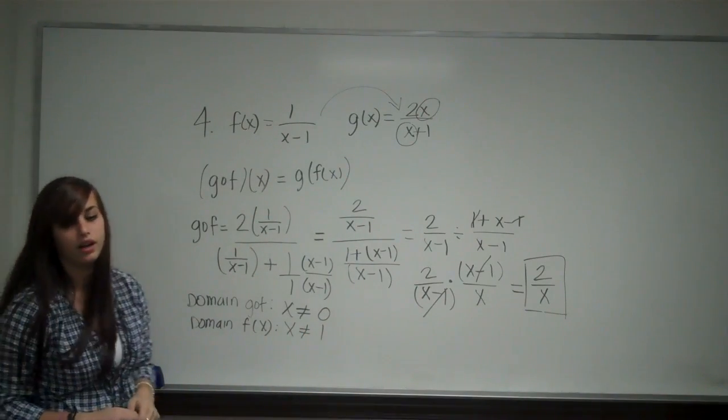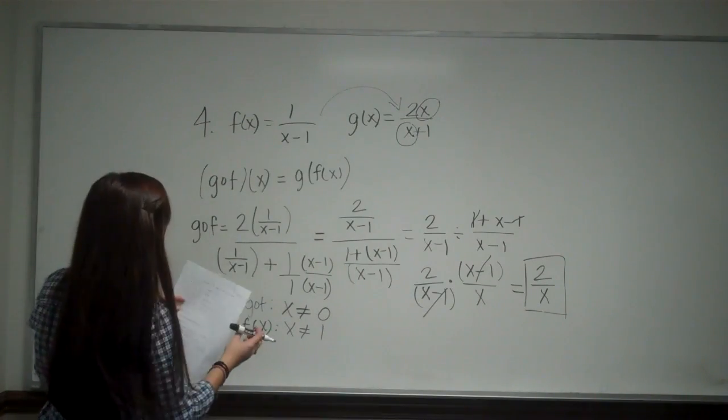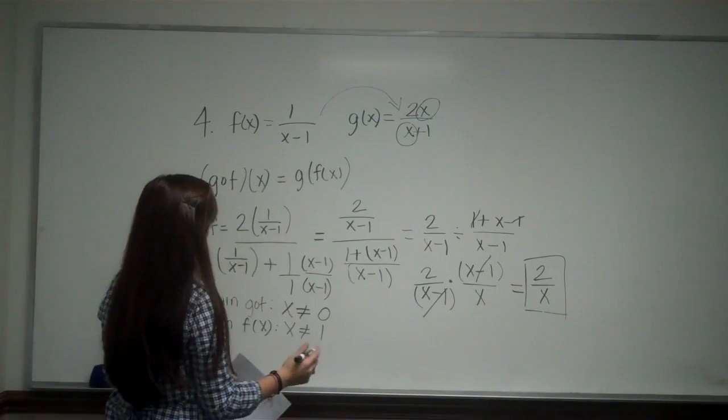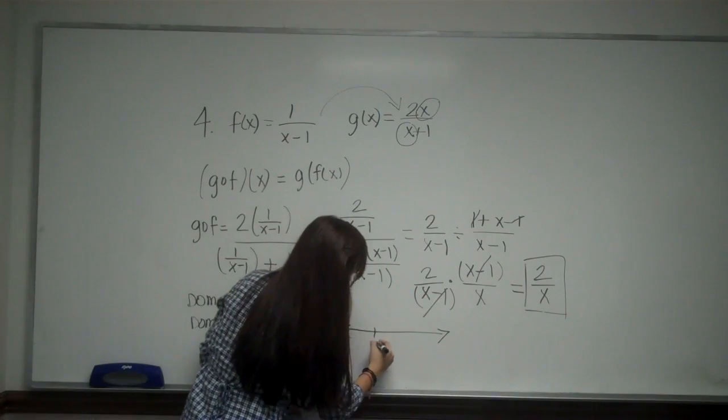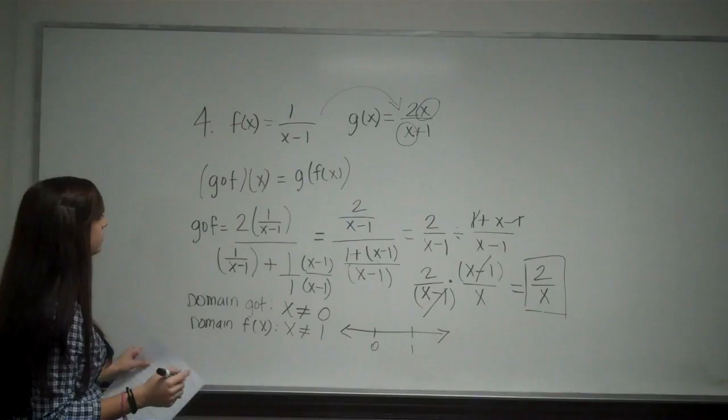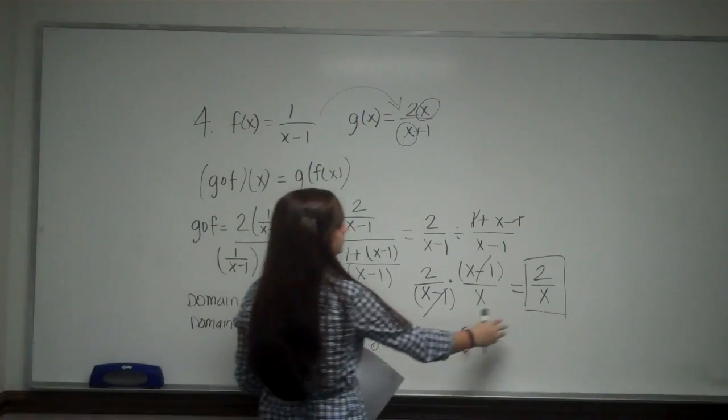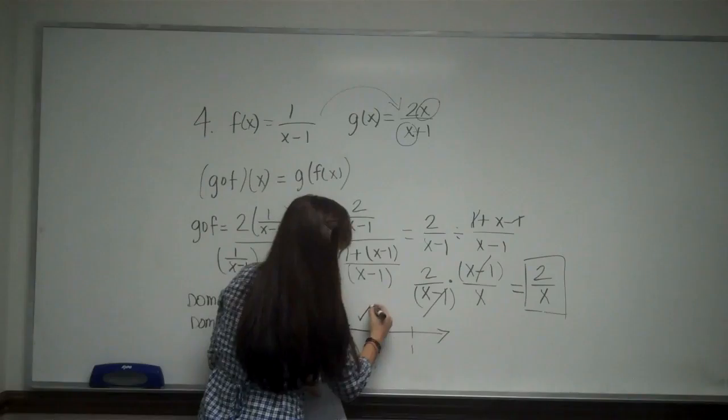So in your answers, they want you to write these as an interval. And to do that, you can use a number line test. We have the value of 0 and we have the value of 1. Now you would plug values into this equation, and as we can see, they are all going to work. So these all work.